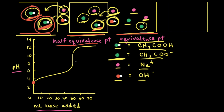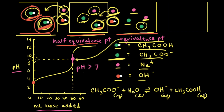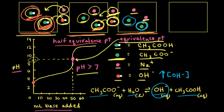We can estimate the equivalence point on our titration curve by finding the area of sharp pH increase and marking approximately halfway up that rise. Going over to the y-axis, the pH at the equivalence point appears to be between 8 and 9 — greater than 7. This is because at the equivalence point, acetate anions are present in solution and react with water to form hydroxide anions and acetic acid, increasing the hydroxide concentration. This is called anion hydrolysis, and it is why the pH is greater than 7 at the equivalence point for a weak acid–strong base titration.